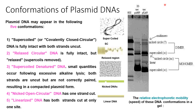Confirmation of plasmid DNA: plasmid DNA may appear in five conformations. One is supercoiled, also called covalently closed circular (CCC) DNA — it is fully intact in both strands and uncut. Next is relaxed circular DNA — the DNA is fully intact but supercoiling is removed. Supercoiled denatured DNA occurs in small quantities following excessive alkaline lysis; both strands are uncut but not correctly paired, resulting in a compacted plasmid form. Nicked open circular DNA has one strand cut, whereas linear DNA has both strands cut at one site.